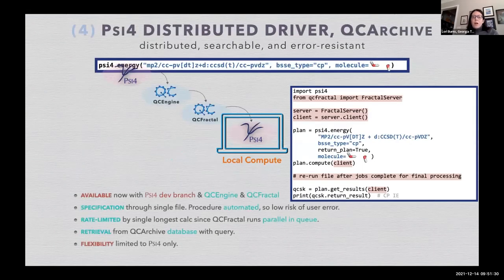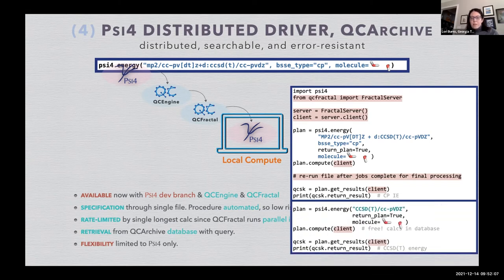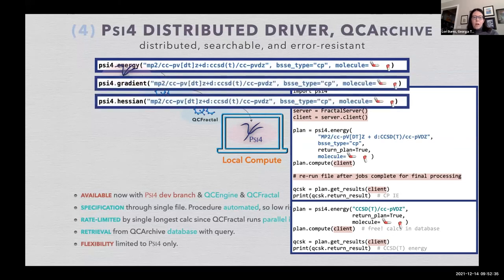What this looks like on our test calculation is now our run through Psi4 is actually calling QC Fractal, that's calling QC Engine, and that's calling Psi4 again. An input file could look like this, where you are setting up your plan, telling QC Fractal to go compute it, and then rerun this file after all the jobs complete and you get back your counterpoise-corrected result. The nice thing, of course, is that if you then run another calculation a bit later that is already in the database, then this returns immediately so you get it back for free. So now we've solved some of our problems. The procedure is still automated. You're running in parallel again, finally. You can easily retrieve your results from the QCArchive database with a query, but you're still only limited to Psi4. And of course, whatever you can run as an energy, you can run as a gradient.